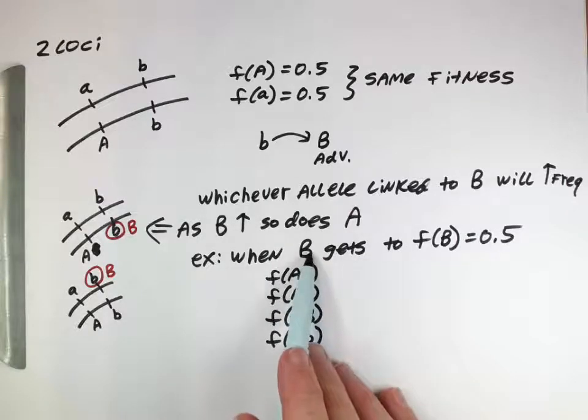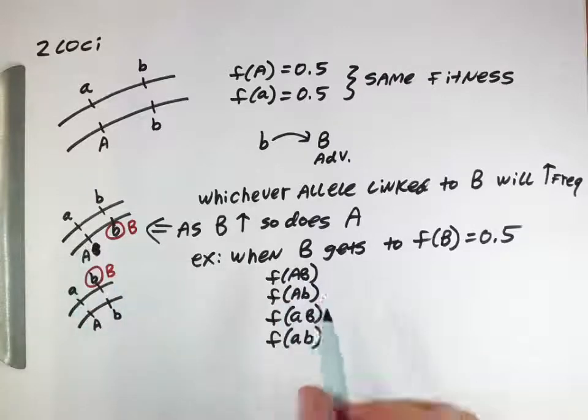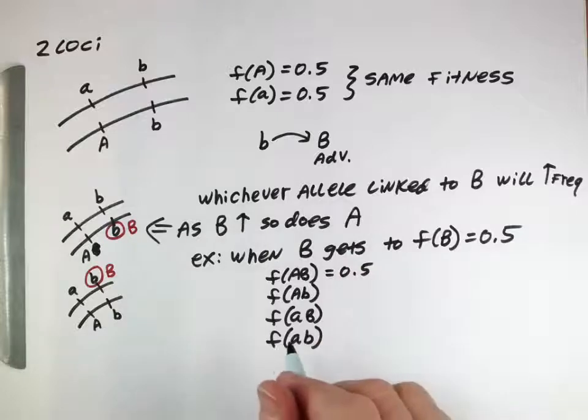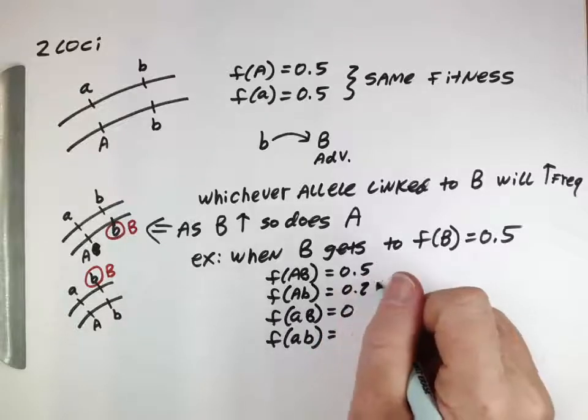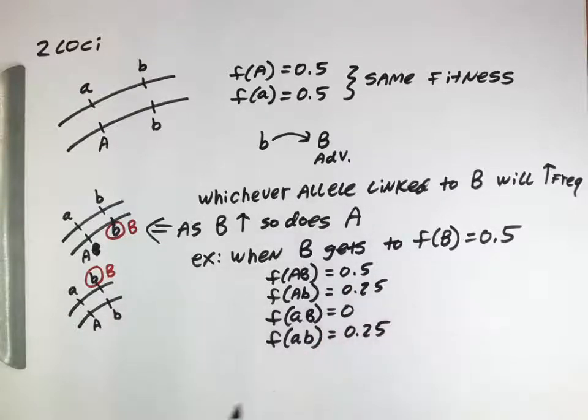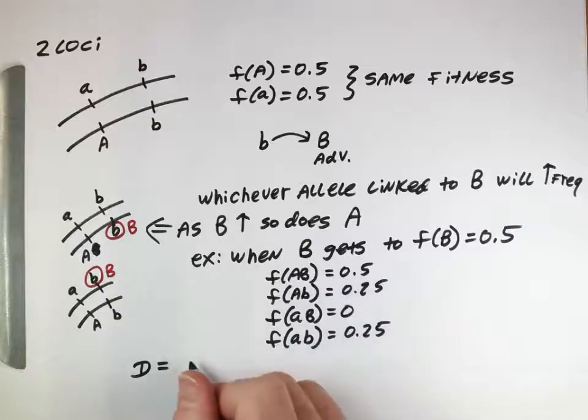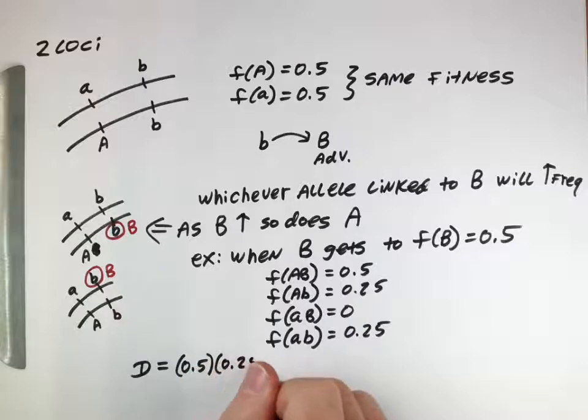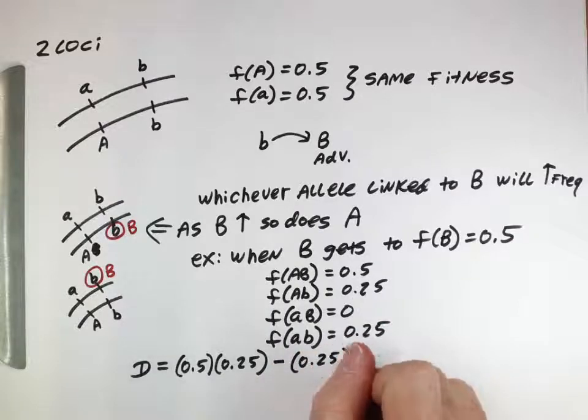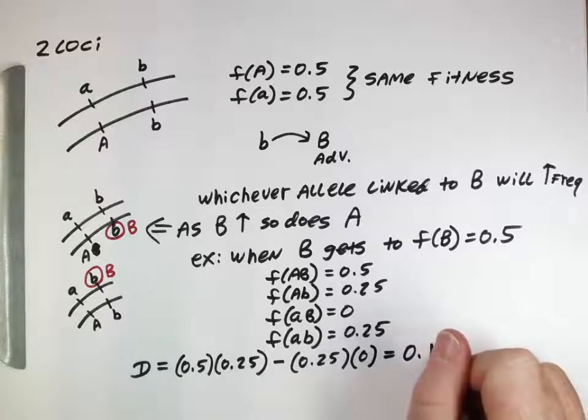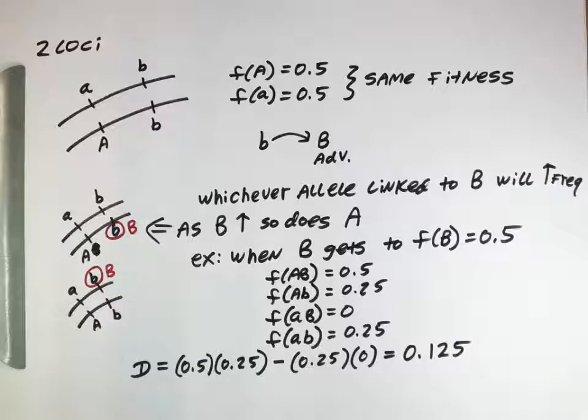Well, capital B getting to 50%, if it was next to the capital A, that means these guys are at 50%. And that means that there aren't any of these guys, because the capital B allele is only associated with the capital A allele. And then the remaining two haplotypes will make up the other 50%. And now if we were to calculate the linkage disequilibrium, remember it was this times this, so that would be 0.5, 0.25, minus this times this, 0.25, 0. And you calculate that out, 1, 2, 5.